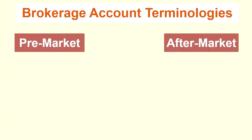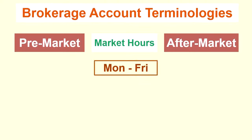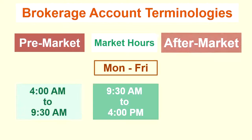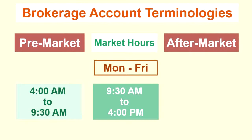Now pre-market and aftermarket. To understand these, we first need to understand market hours — the normal trading hours from Monday to Friday, not including holidays, from 9:30 a.m. to 4 p.m. The pre-market is the trading period before the normal market hours start, from 4 a.m. to 9:30 a.m. The aftermarket is the trading period after the normal market hours end, from 4 p.m. to 8 p.m. Not all brokerage firms allow you to trade for the full pre-market and aftermarket periods, so check with your brokerage firm for any restrictions.